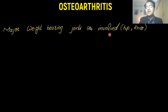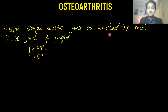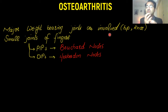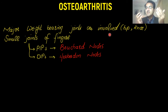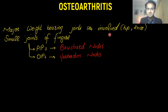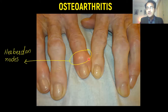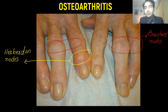It involves major weight-bearing joints like the hip and knee. It also involves the small joints of the hands — the proximal interphalangeal joints (PIPs) and distal interphalangeal joints (DIPs). When it involves the PIPs, it causes Bouchard nodes formation — bony proliferation from joint destruction and remodeling. At the DIPs, there are Heberden nodes. This picture shows the distal and proximal interphalangeal joints with swelling characteristic of each node type.